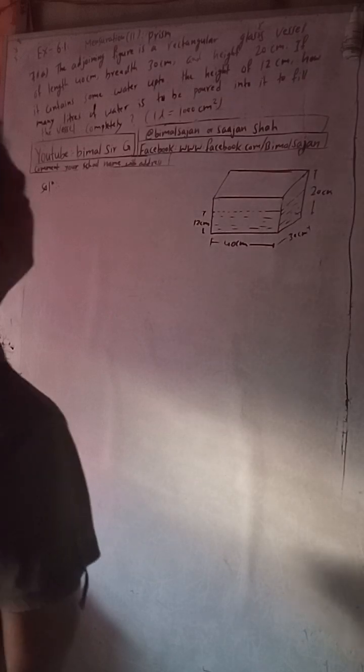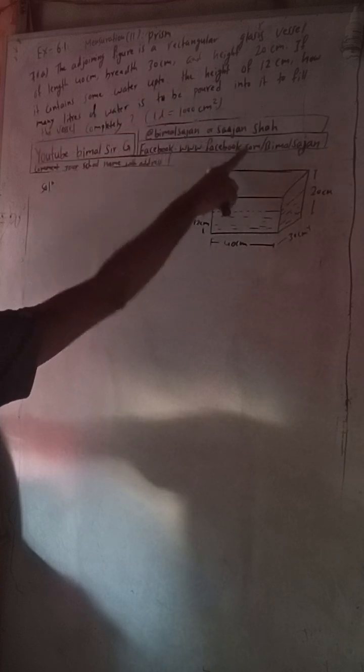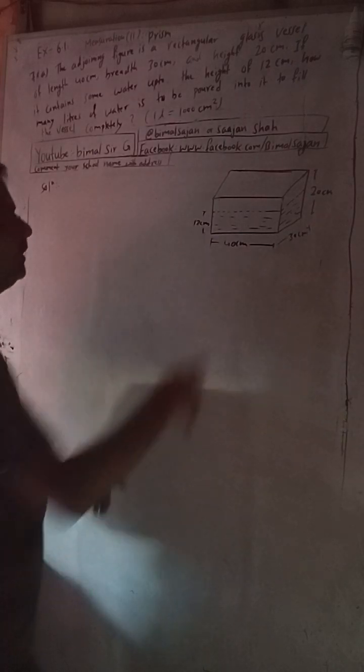The adjoining figure is a rectangular glass vessel of length 40 cm, breadth 30 cm, and height 20 cm. If it contains some water up to a height of 12 cm, how many liters of water is to be poured into it to fill the vessel completely?